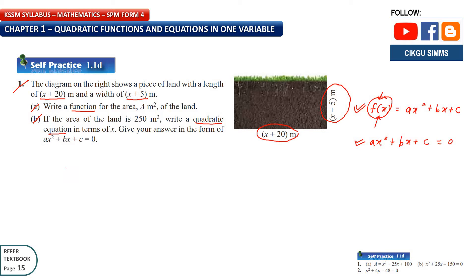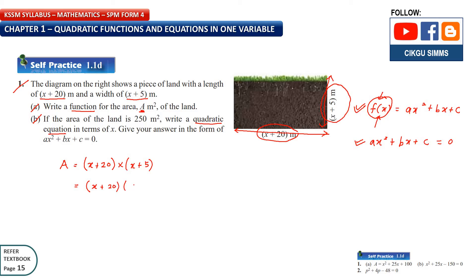For question A, we need to write the function, and our function is area. For the area of a rectangle, you know it's length times width. So the area is (x + 20) times (x + 5). You can also skip the multiplication sign and expand the two brackets.